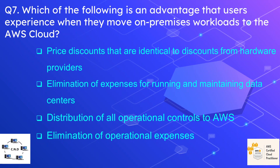Question number seven: which of the following is an advantage that users experience when they move on-premises workloads to the AWS cloud? The options are: discounts identical to those from hardware providers, elimination of expenses for running and maintaining data centers, distribution of all operational controls to AWS, and elimination of operational expenses. The correct option is elimination of expenses for running and maintaining data centers.